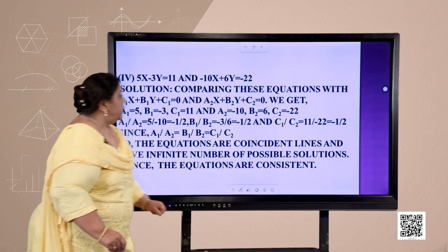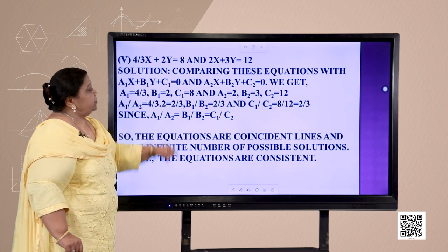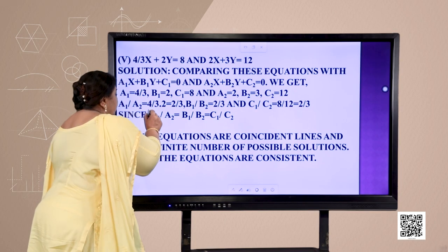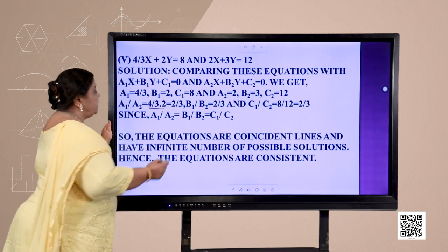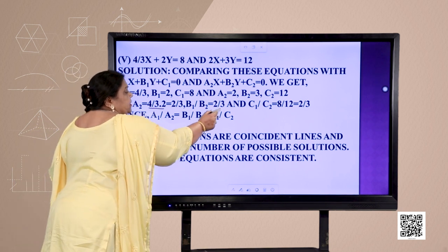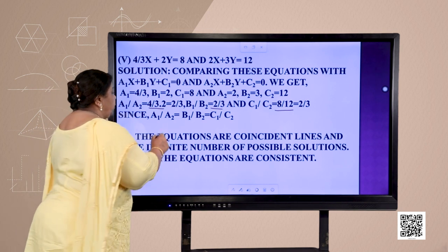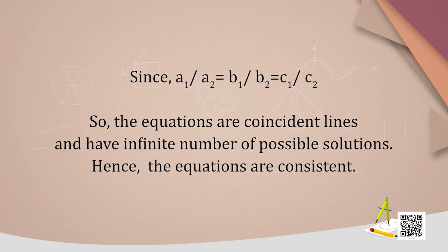Let us look into the next part: (4/3)x + 2y = 8 and 2x + 3y = 12. Comparing, we get a1 = 4/3, b1 = 2, c1 = 8, a2 = 2, b2 = 3, c2 = 12. The ratios: a1/a2 = (4/3)/2 = 2/3, b1/b2 = 2/3, and c1/c2 = 8/12 = 2/3. Since a1/a2 = b1/b2 = c1/c2, the equations are coincident lines with infinite solutions. Hence the system of equations is consistent.